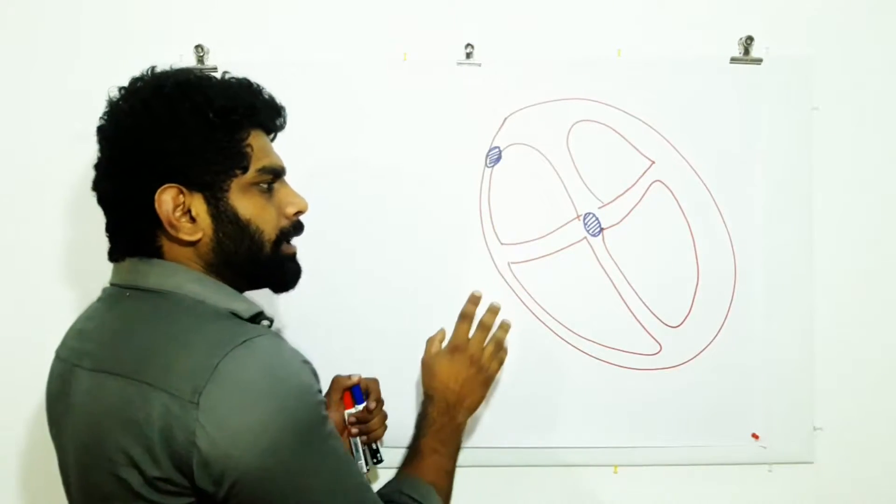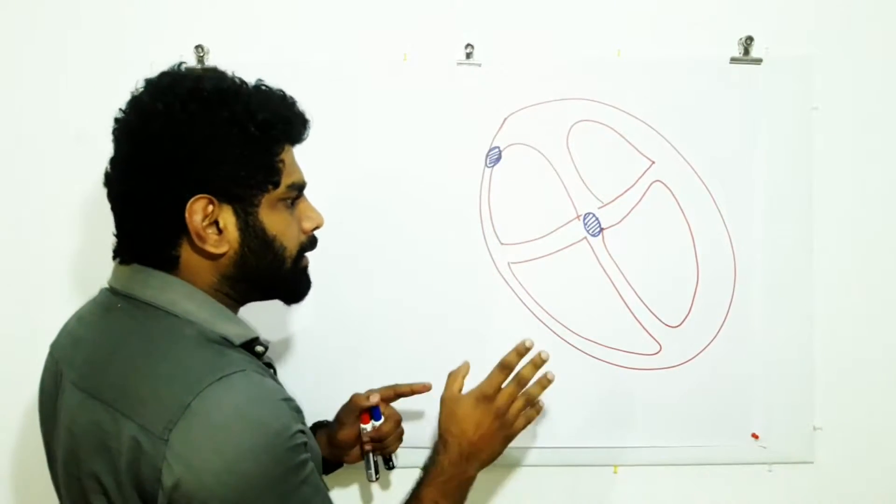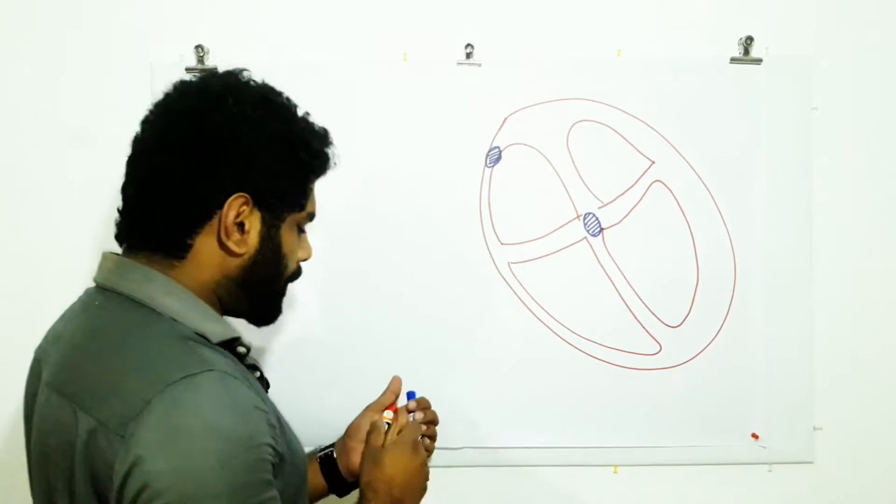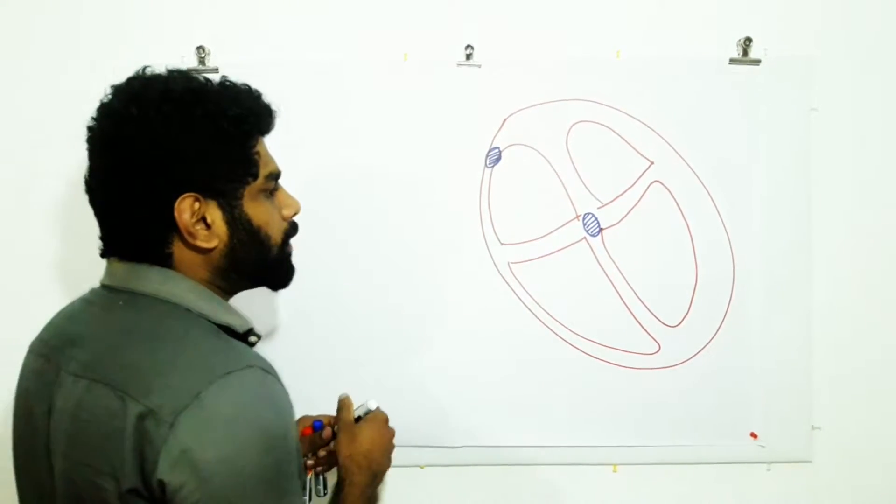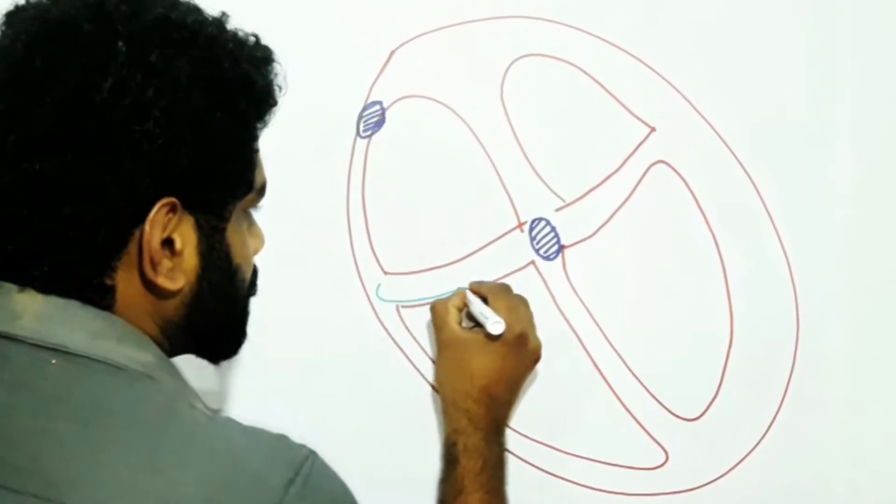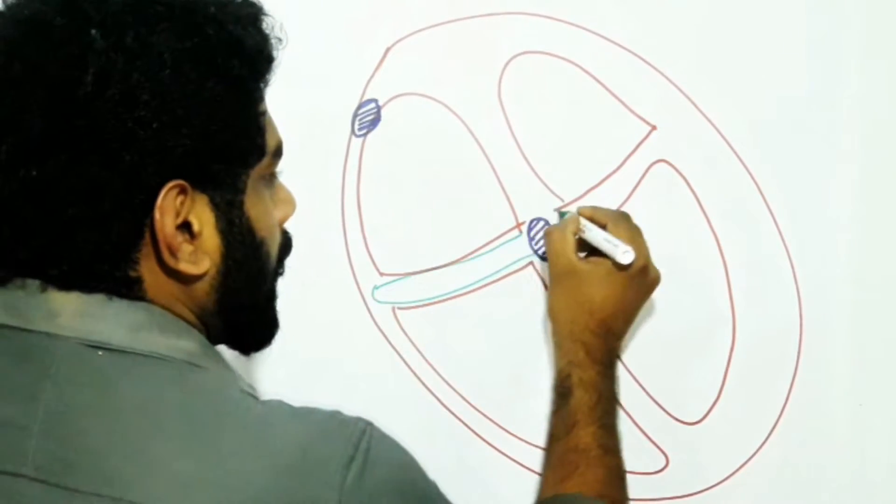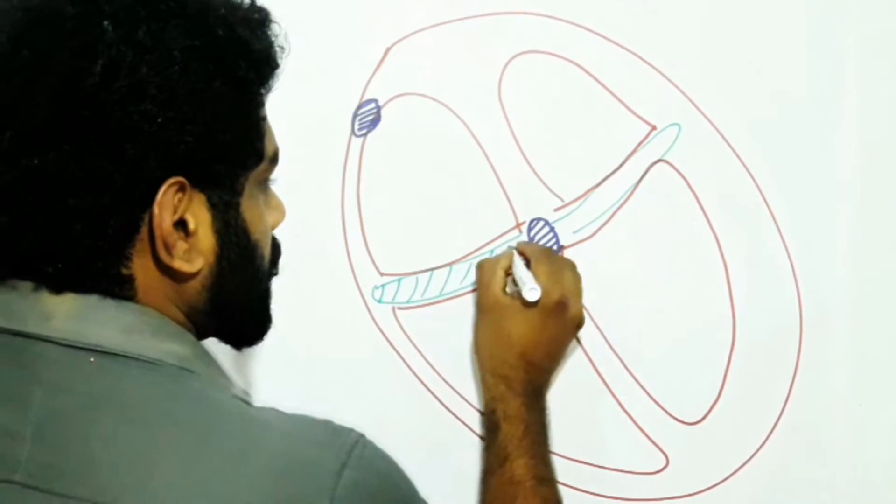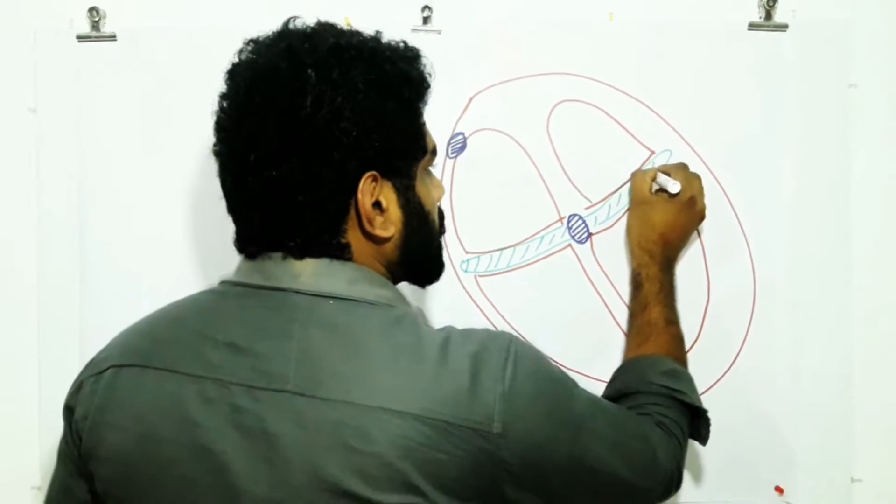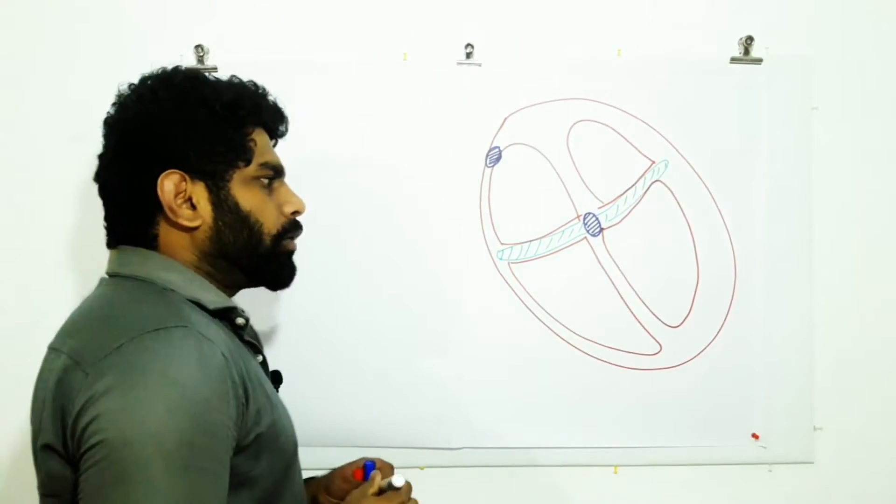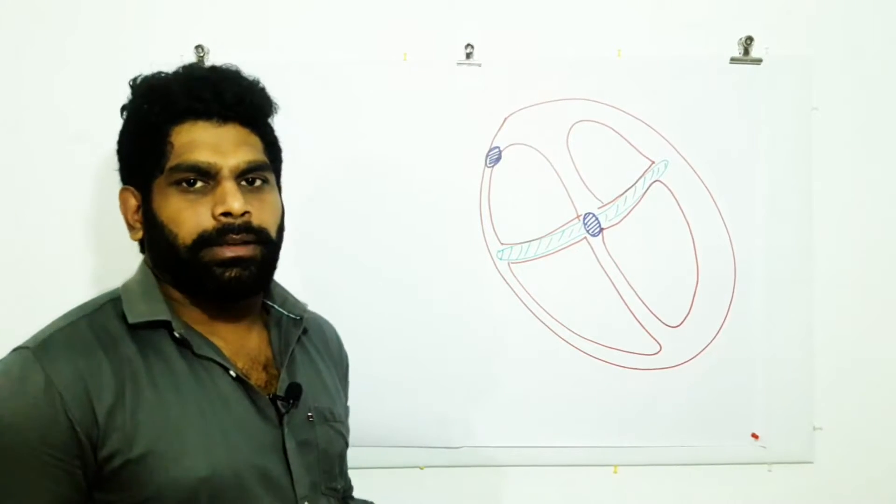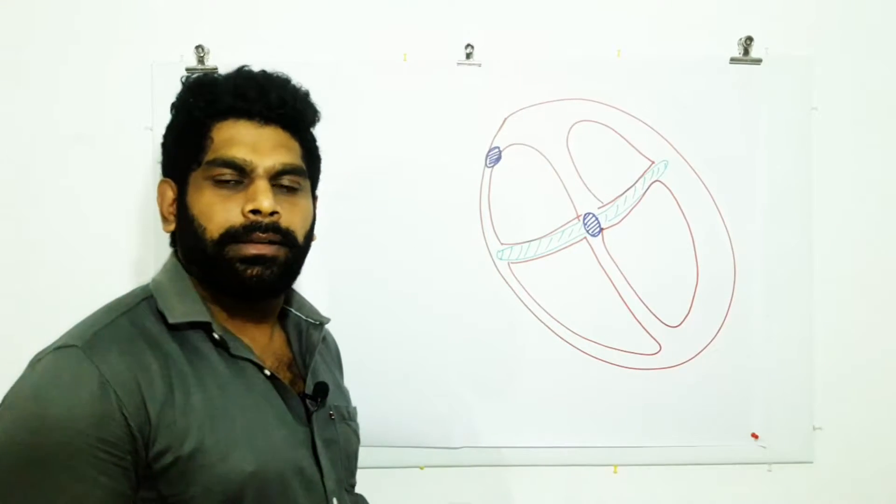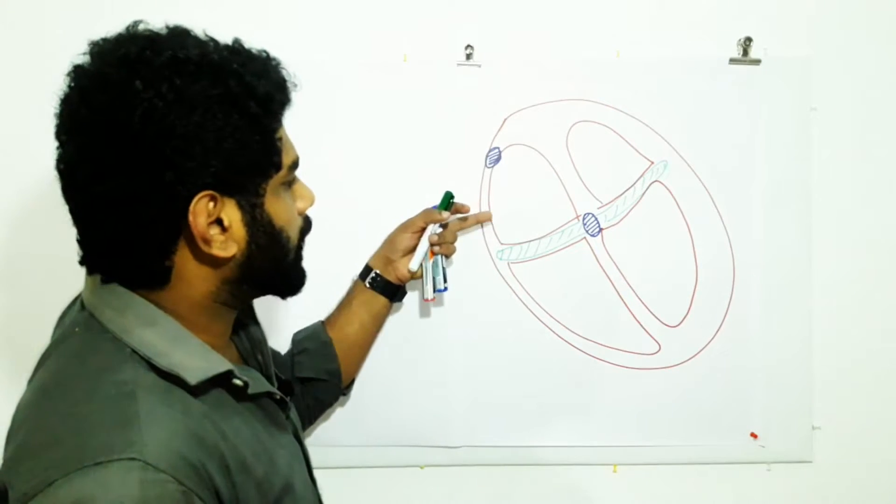But these impulses can't directly enter into the ventricle because there is a structure called fibrous annulus in the atrioventricular septum. This is called the fibrous annulus. Fibrous annulus is an electrical insulator. It won't allow the electrical impulses from the atria to the ventricle.